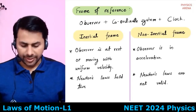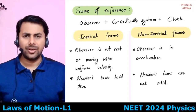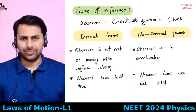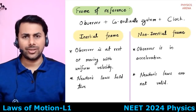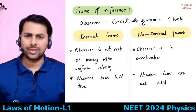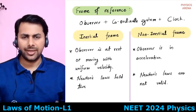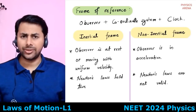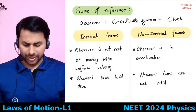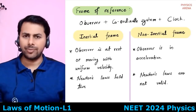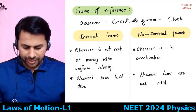An inertial frame of reference is one where the observer is either at rest or moving with constant velocity. Newton's laws are applicable in an inertial frame of reference. If the observer is accelerating, they cannot apply Newton's laws — this is called a non-inertial frame of reference. Newton's laws are designed to be applied only in an inertial frame of reference.